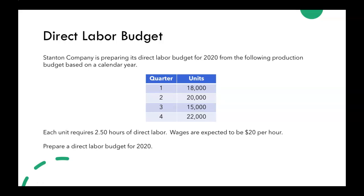We're told that each unit requires two and a half hours of direct labor, and wages are expected to be $20 per hour. We need to use all of that information to prepare a direct labor budget for 2020.